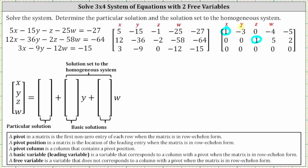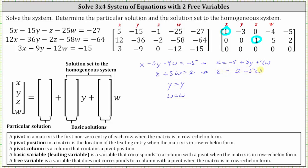The next step is to write the equations for each row of the augmented matrix in reduced row echelon form. Row one indicates that x minus 3y minus 4w equals negative 5. In the second row, we have z plus 5w equals 2. Because y and w are free variables, we also include the equations y equals y and w equals w. We now need to express x and z in terms of y and w by solving the first equation for x and the second equation for z. Solving for x: x equals negative 5 plus 3y plus 4w. Solving for z: z equals 2 minus 5w. The last two equations remain: y equals y and w equals w.